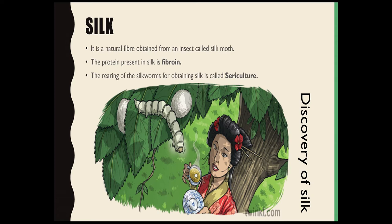She observed that when the silk fibers were over, what was left behind was a small larva. She realized that the larva was actually the source of these silk fibers. Because of the lustrous appearance of these fibers, she thought of using them for making fabrics. Thus began the silk industry in China, and it was kept as a closely guarded secret for hundreds of years.